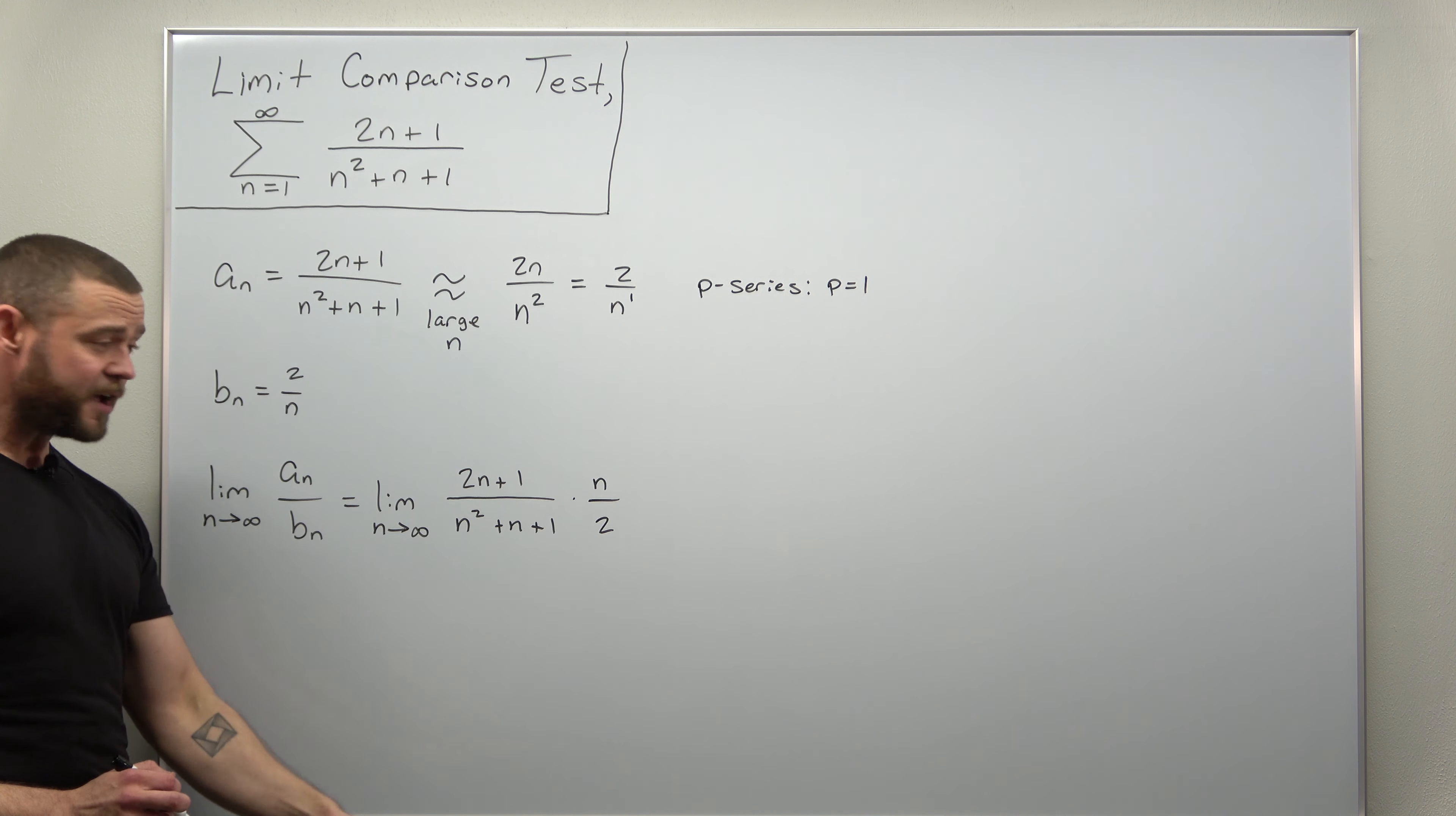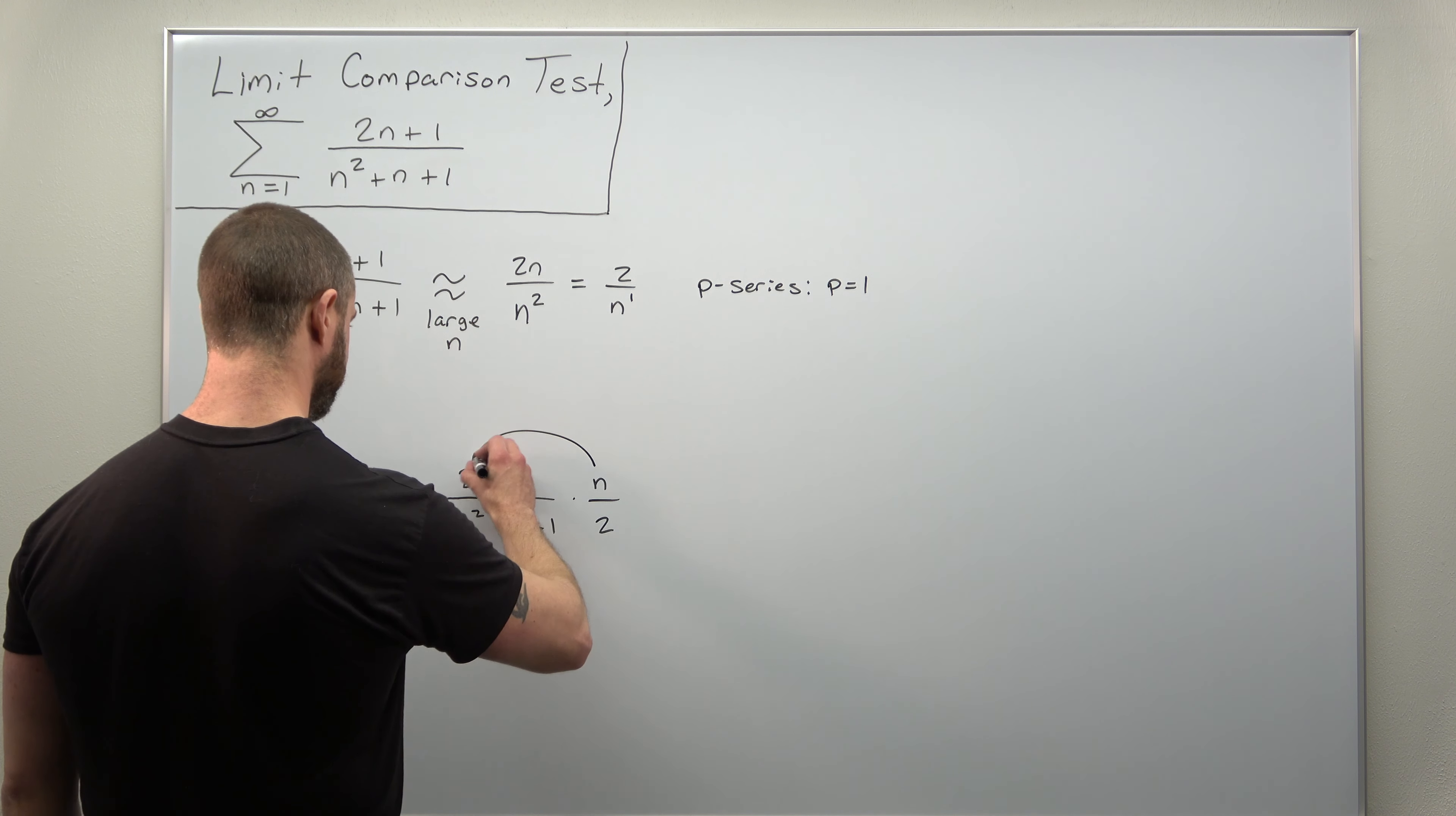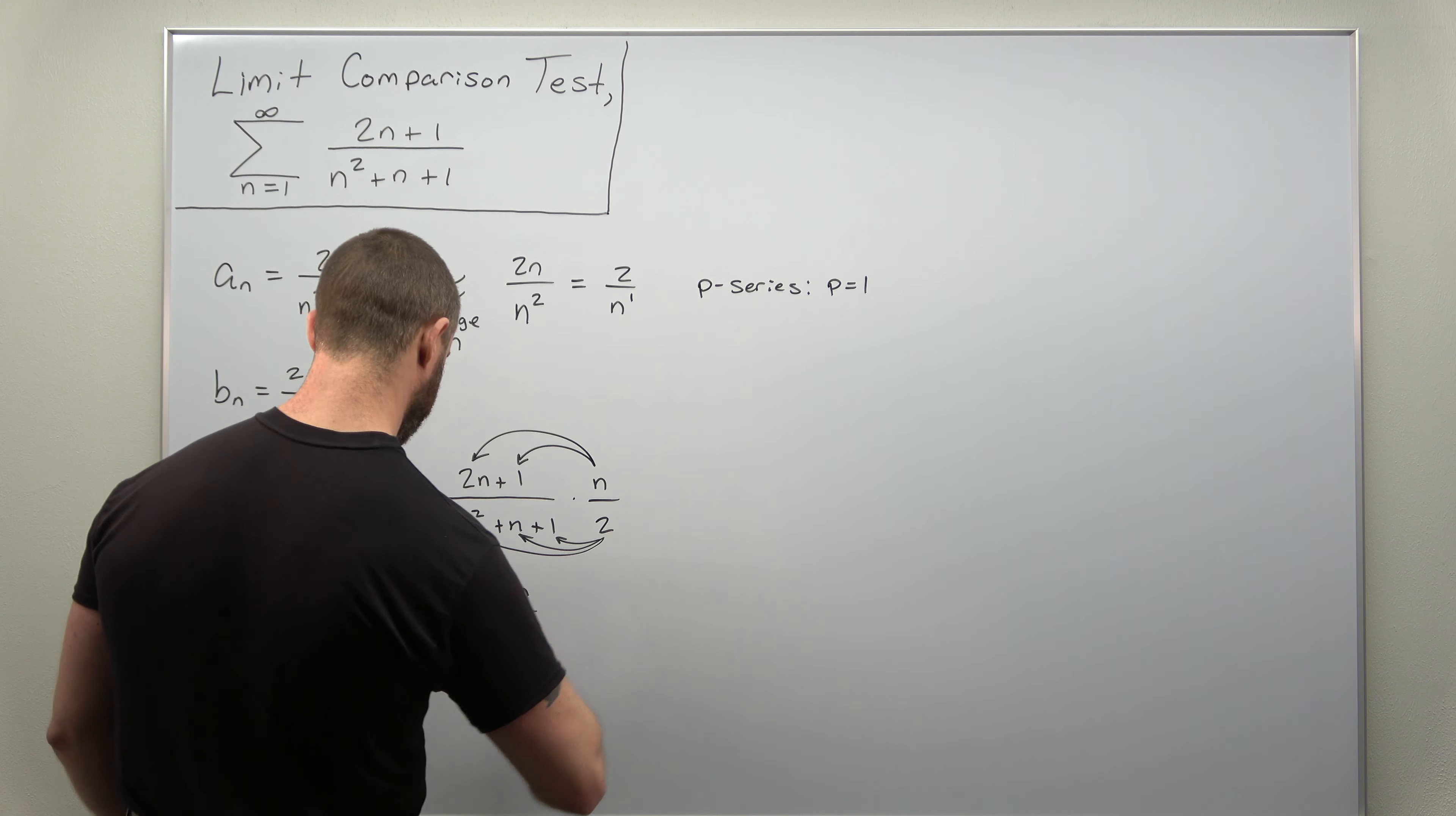Now this limit is going to be very easy to evaluate. It might be easier to see what you get if you distribute the n to each part of the numerator and the 2 to each part in the denominator. So let me just go ahead and write that. If you distribute the n, looks like that's going to be 2n squared plus n. And then similarly, if you distribute the 2 here, looks like we're going to get 2n squared plus 2n plus 2.